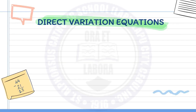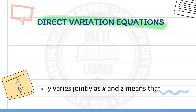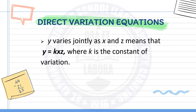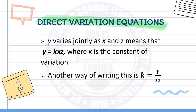The joint variation equation: y varies jointly as x and z means that y equals k times x times z, where k is the constant of variation. Another way of writing this is k equals y over xz. k still represents the constant of variation.